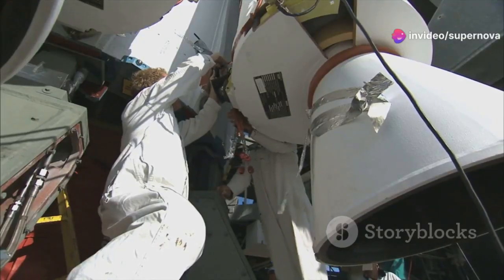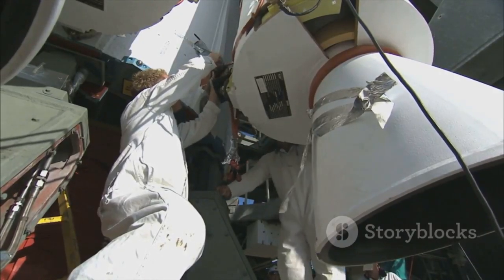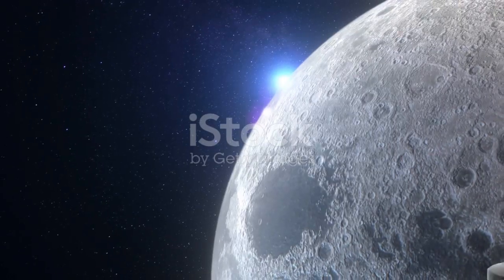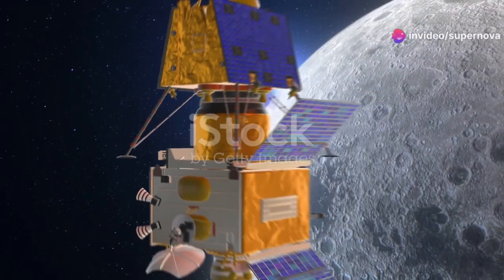A marvel of engineering with a giant segmented mirror. It has a sun shield the size of a tennis court. JWST orbits the sun a million miles from Earth.